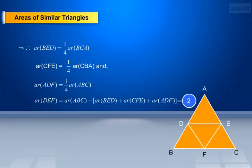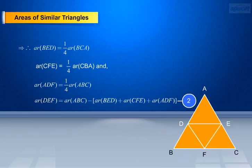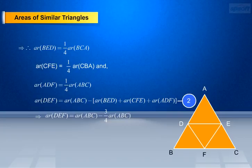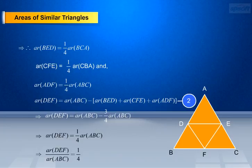Therefore, AR of DEF equals AR of ABC minus (AR of BED + AR of CFE + AR of ADF). Make it as equation 2. On substituting the values: AR of DEF equals AR of ABC minus (1/4 × AR of BCA + 1/4 × AR of CBA + 1/4 × AR of ABC). This implies AR of DEF equals AR of ABC minus 3/4 × AR of ABC, which equals 1/4 × AR of ABC. Therefore, AR of DEF by AR of ABC equals 1/4.